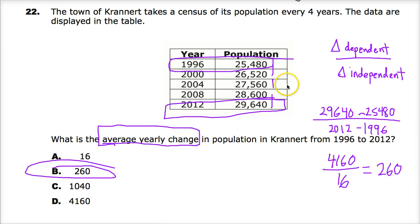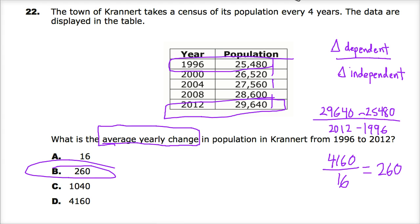But this is the amount of change per year, because I need to spread that out over four years. It's looking a little linear here, so it probably does have consistent changes throughout. The answer to number 22 is B: 260 people are added to the census rolls of the town every single year between 1996 and 2012.